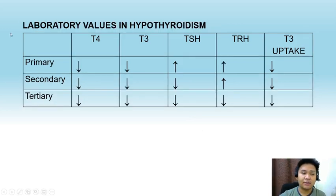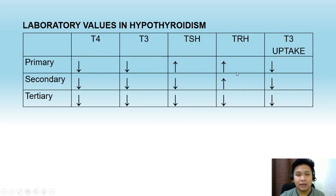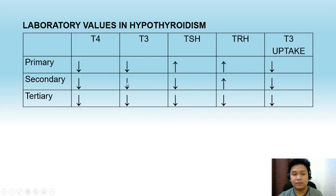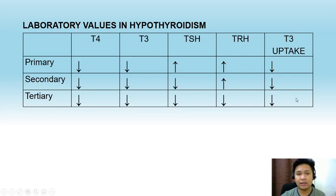For hypothyroidism, the same classification is used: primary, secondary, and tertiary. In primary hypothyroidism, the problem is in the thyroid gland itself; in secondary, the problem is in the pituitary; in tertiary, the problem is in the hypothalamus. In primary hypothyroidism, the thyroid gland undersecretes T4 and T3, so TSH and TRH are increased because of negative feedback. In secondary hypothyroidism, TSH is decreased, thus T4 and T3 are also decreased. T3 uptake is directly proportional to T4 and T3, so we expect T3 uptake to be decreased in all types of hypothyroidism.